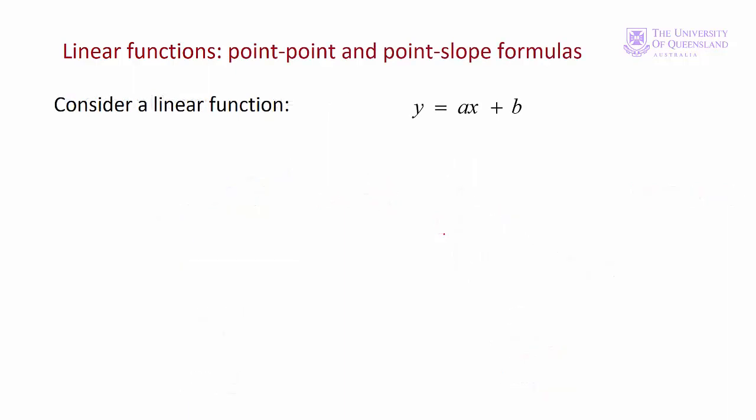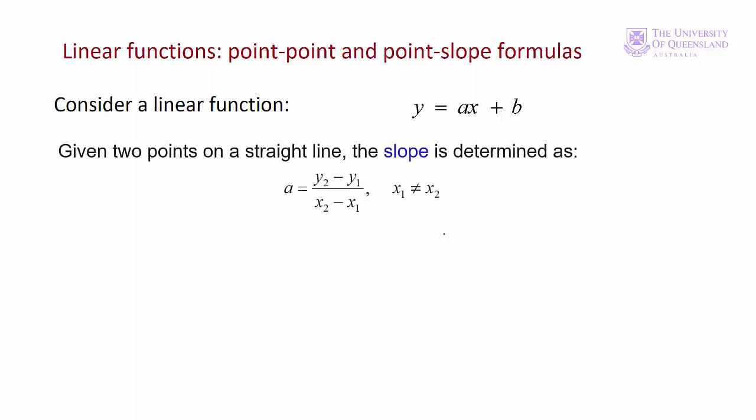If we have a linear function of that form, and we have two points x1, y1, x2, y2, then we can recover the equation to the line for the graph. We can find the slope, so a is y2 minus y1 over x2 minus x1, so that's delta y on delta x, as we saw before.